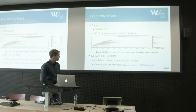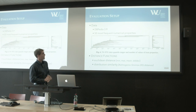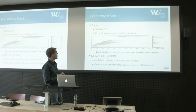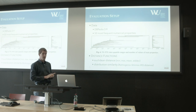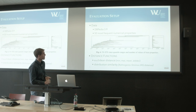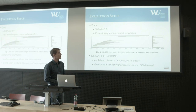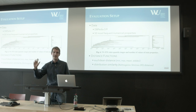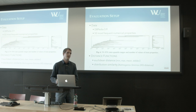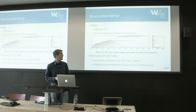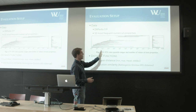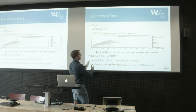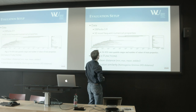So that's the approach — it's actually quite simple but works pretty well, as you will see. For evaluation, we used DBpedia and selected the 50 most frequent numerical properties. We excluded some like the revision ID property — properties which are just counts or internal IDs.